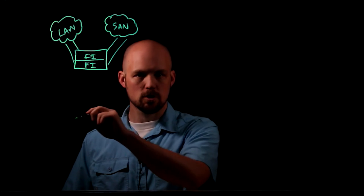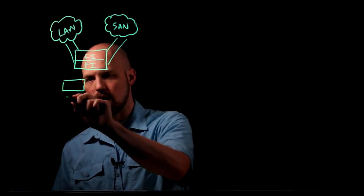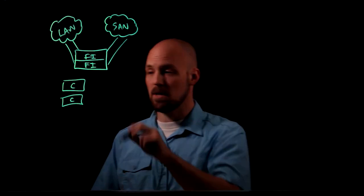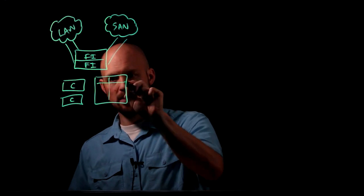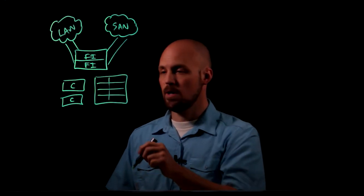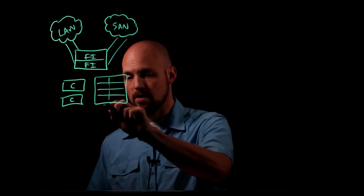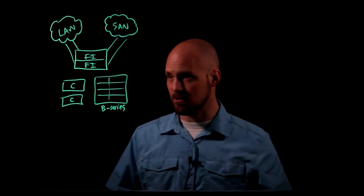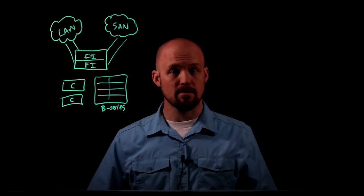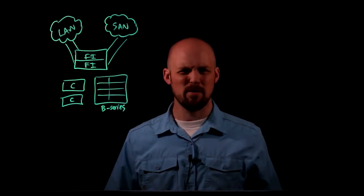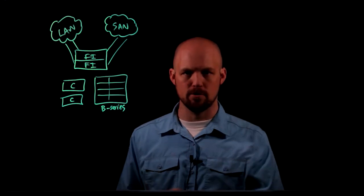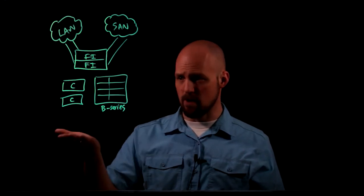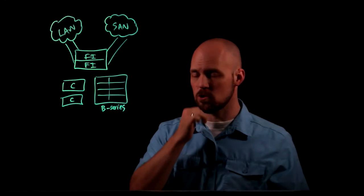And south of the fabric interconnects is where your servers are going to connect. So we have two options for servers in the UCS world. We have rack mount servers. These are called C-series servers. And we have blades. And the blade chassis looks kind of like this. We're talking about eight slots in a chassis. And these are the B-series. So we have a lot of different options for what servers we want to deploy.